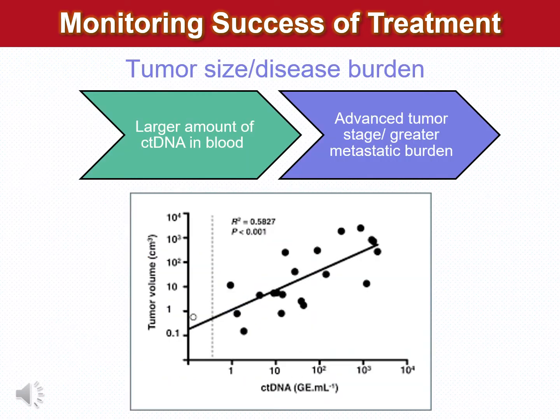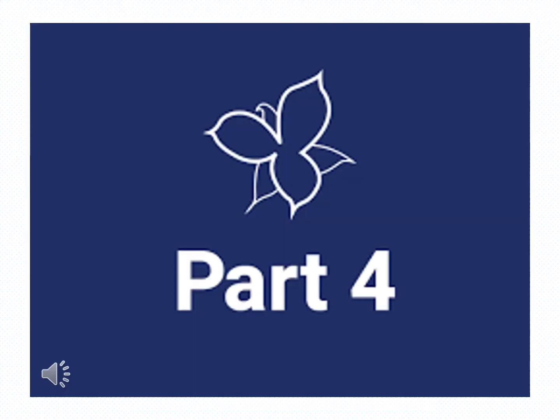Other studies have shown that the amount of circulating tumor DNA correlates relatively well with tumor volume. It is possible by using circulating tumor DNA analysis to get an idea of how much tumor is present in a patient, thus estimating roughly the tumor size.